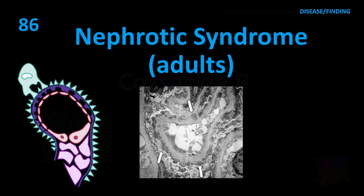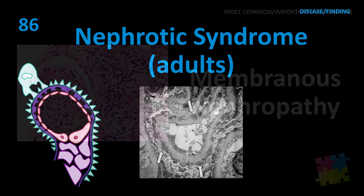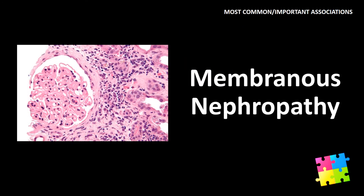Item 86: Nephrotic syndrome in adults — membranous nephropathy.